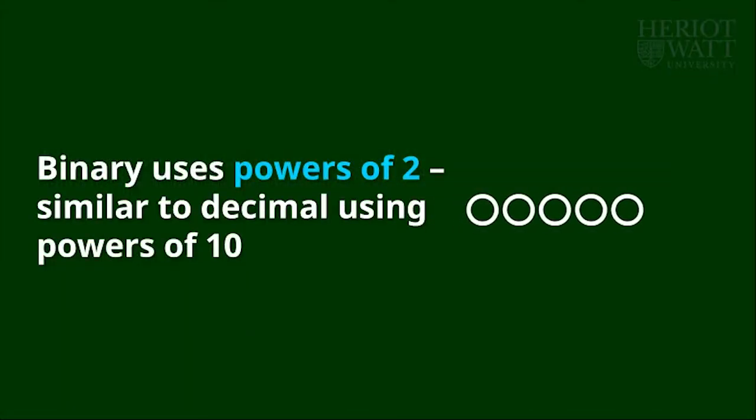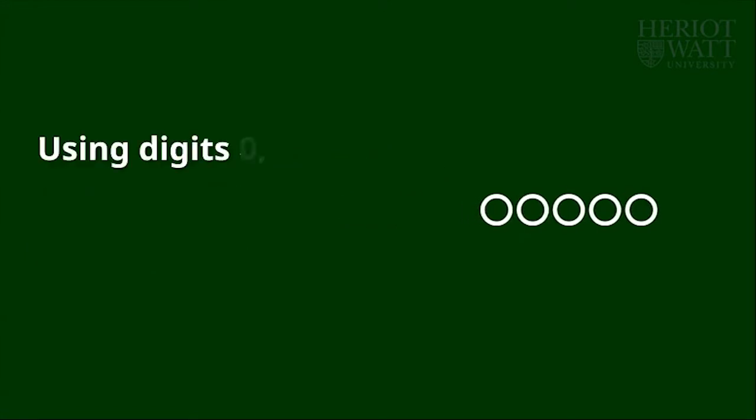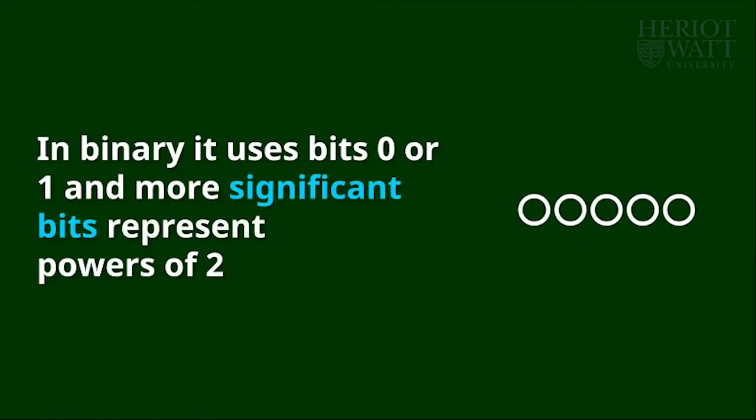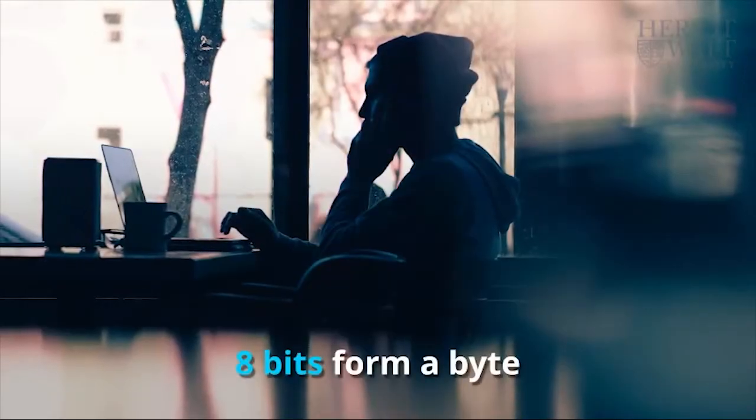Binary uses powers of 2, similar to decimal powers of 10. Using digits 0, 1 to 9, the most significant digits represent powers of 10. In binary, it uses bits 0 or 1, and more significant bits represent powers of 2. 8 bits form a byte.